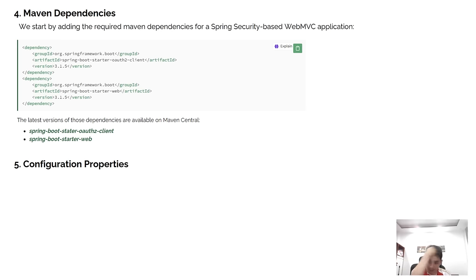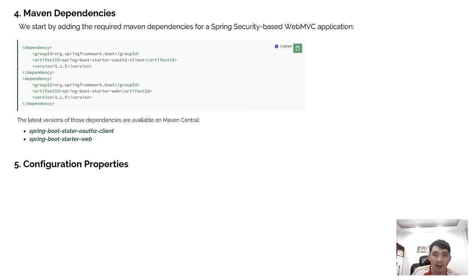We start by adding the Maven dependency for Spring Security based on a web MVC application. Related versions of those dependencies are available on Maven Central.